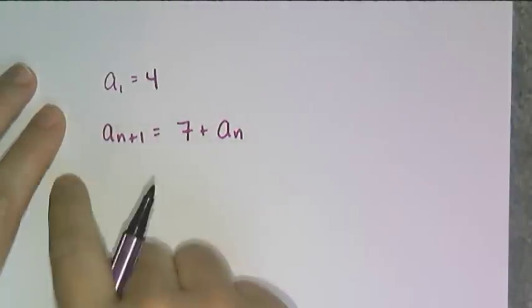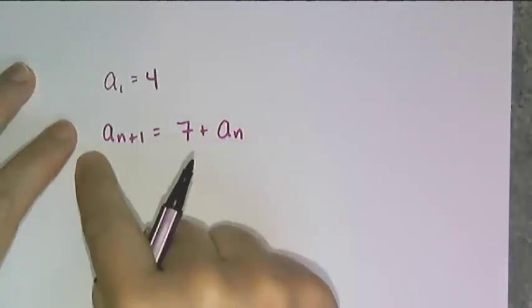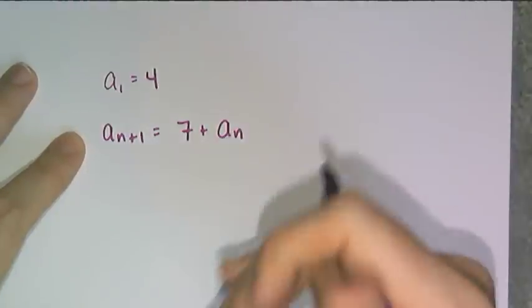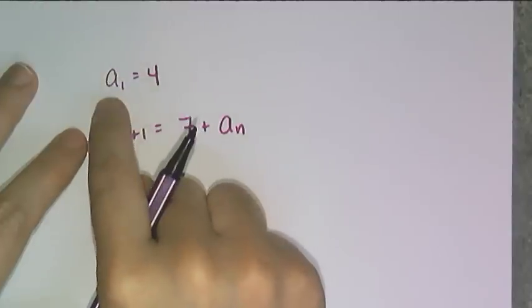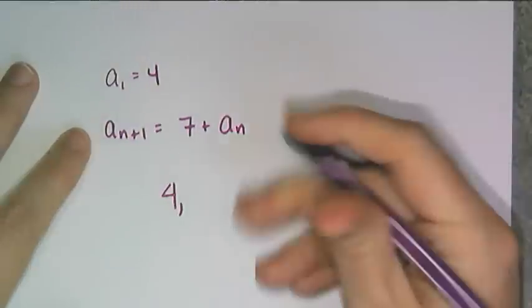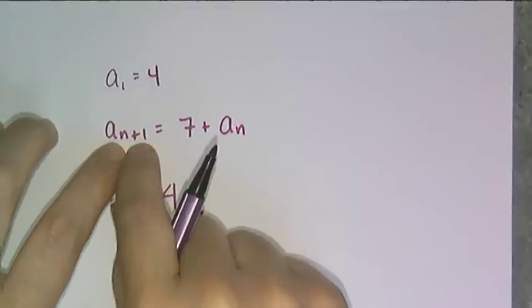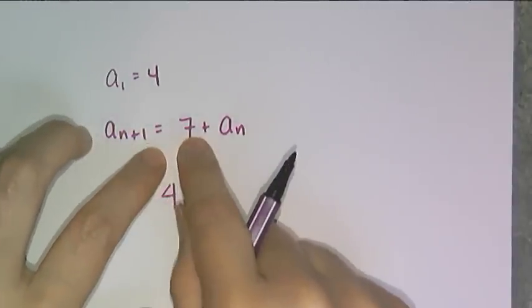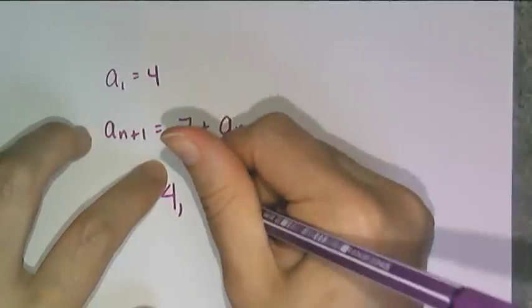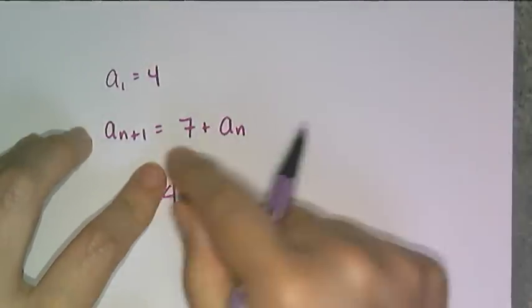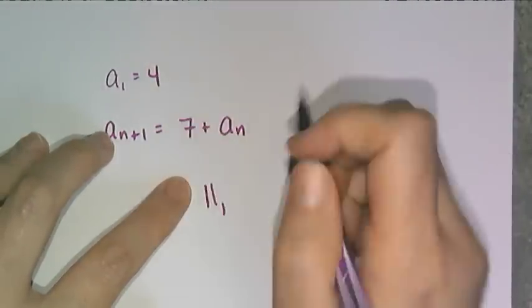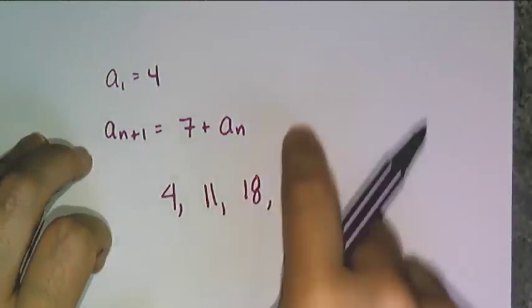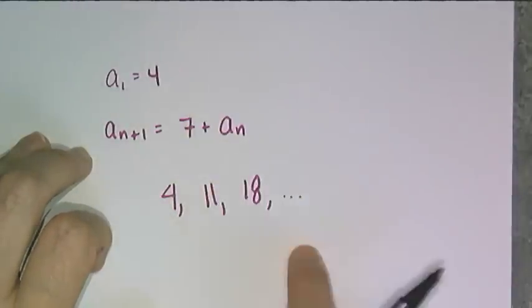Working backwards, if this is the rule for a sequence in sequence notation and I ask you to generate the sequence, that means I want you to write out the terms of the sequence. So I have to start with the first term, which is 4. And then this rule tells me the next term, n plus 1, is equal to the previous term, a sub n, plus 7. So I just have to add 7 to 4, and then I get the next term. And then to find the third term, I take 11, I add 7, I get 18, and so on and so forth. So that's how we can use these rules to generate a sequence.